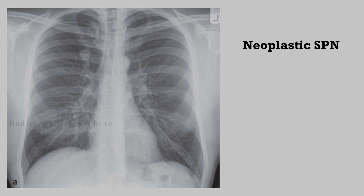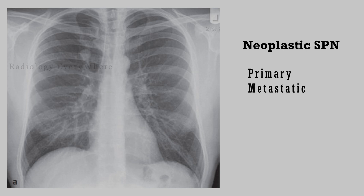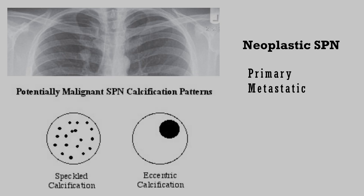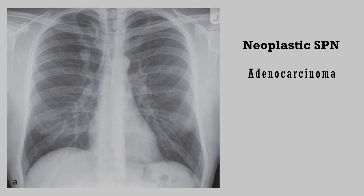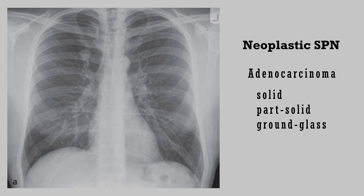The second differential diagnosis is neoplasm. A neoplastic solitary pulmonary nodule can be either primary or metastatic disease. In neoplastic nodules, the borders are usually irregular, and you can see suspicious calcifications such as speckled, eccentric, or amorphous type. Adenocarcinoma presents as a solid, part-solid, or ground-glass nodule in a peripheral location,